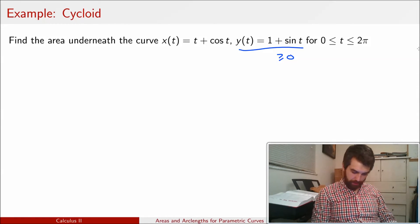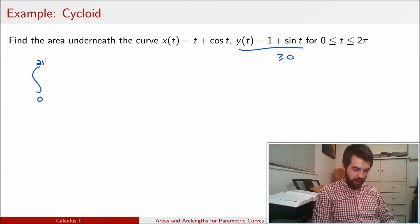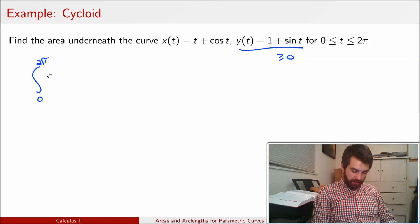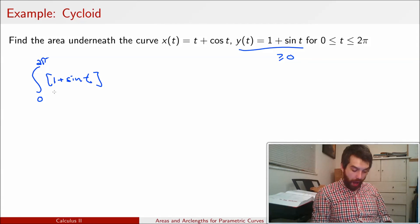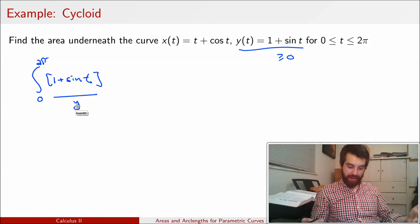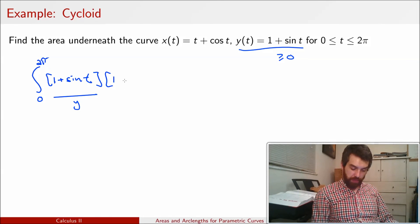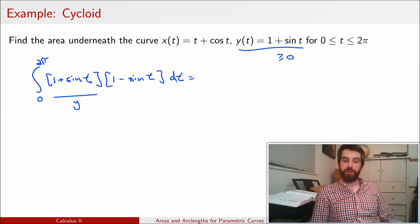Alright, let's just plug away. I can now come and say that this is going to be the integral from my alpha is zero, my beta is going to be two pi, my y coordinate is going to be 1 plus sine of t. And then after writing down my y, that's what I just wrote down here, that was my y, I need to multiply by my x prime. So the derivative of t is just going to be one and then 1 minus sine of t and all of this dt. And this is just a definite integral so we can go ahead and do it.